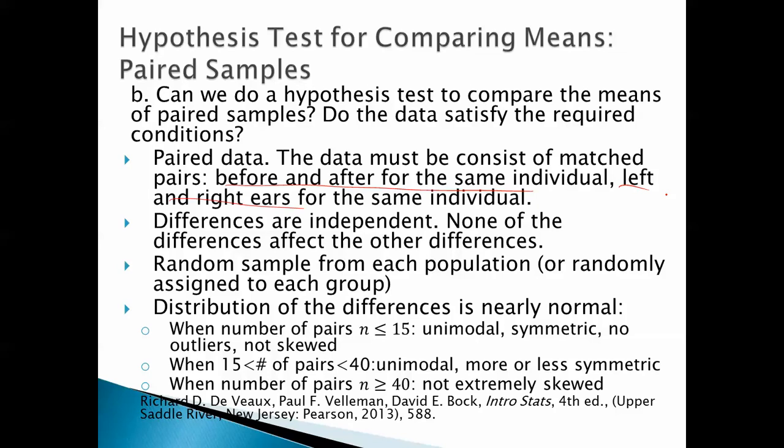There's a random sample from each population, or people are randomly assigned to each group. We've got that. Distribution of the differences is nearly normal. When the number of pairs is less than or equal to 15, the differences have to look like that.